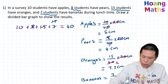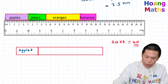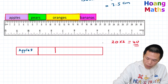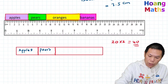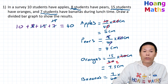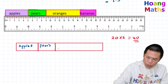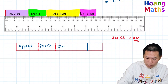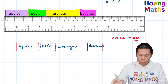For pears, we have 8 students — half of 8 is 4, so we shade 4 grids: one, two, three, four. That section is pears. For oranges, we have 15 students — half of 15 is 7.5, so we go one, two, three, four, five, six, seven, and then half a grid. That section is oranges. Whatever is left is bananas. There you go.